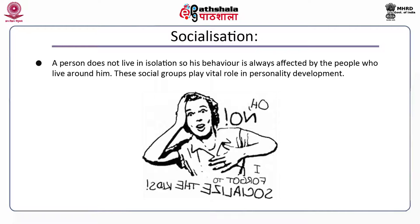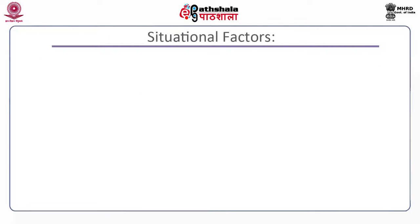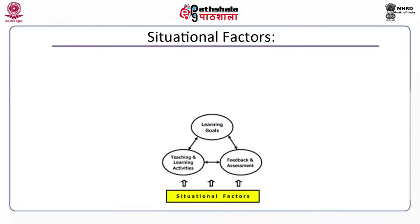Number four is socialization. A person does not live in isolation, so his behavior is always affected by the people around him. Social groups play a vital role in personality development. This aspect is relevant to organizational behavior since a person always works within some social group. Socialization initially starts with contact with the mother and later with other family members like father, sister, brother, and close relatives, all of whom play an influential role in shaping an individual's personality.